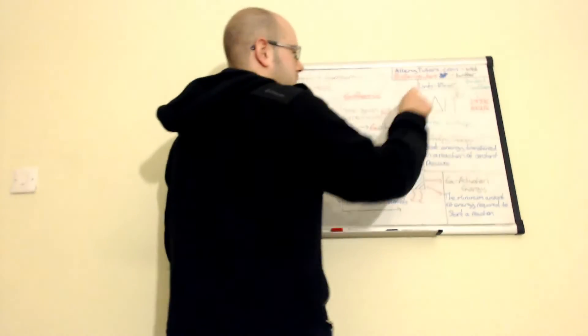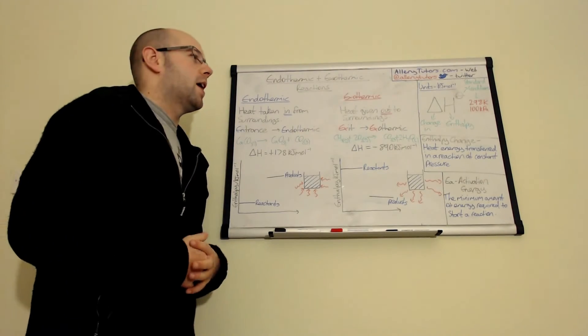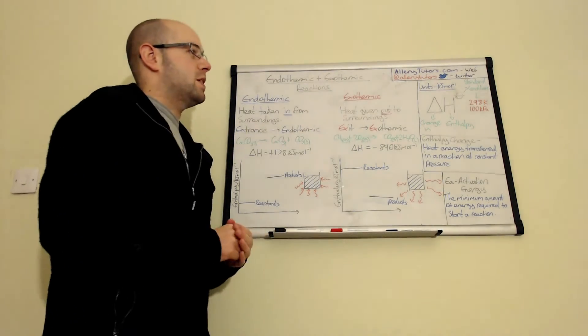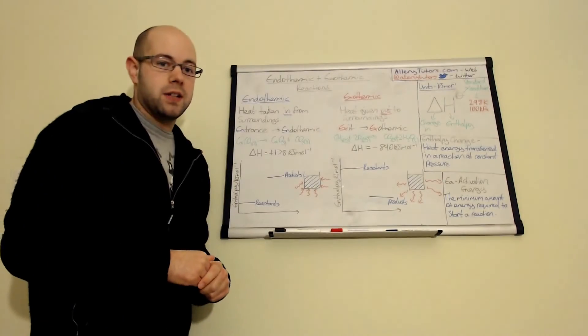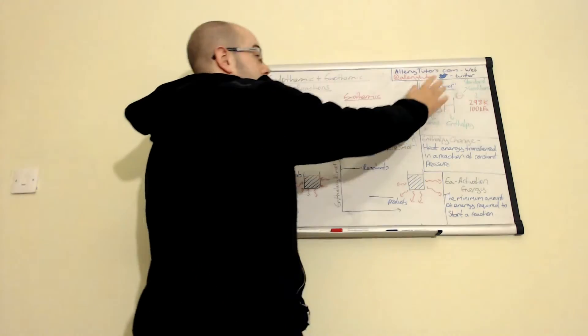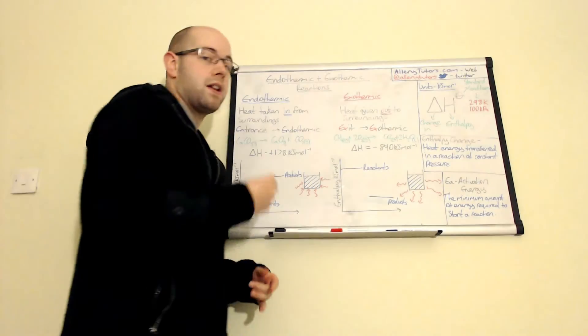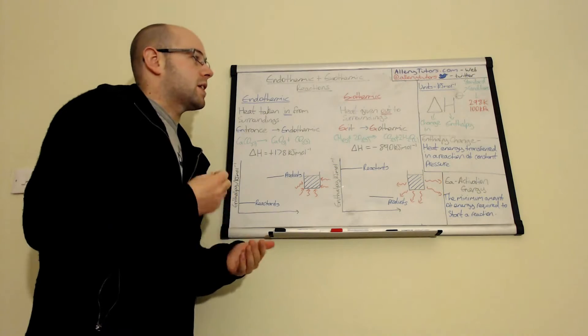And then we have this, it looks like an underground symbol. This basically just means in standard conditions, which means 298 Kelvin and 100 kilopascals. So you might see this quite a lot. And the units of enthalpy change is kilojoules per mole.